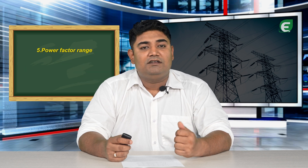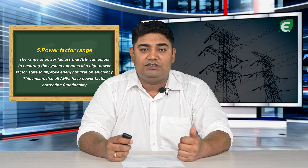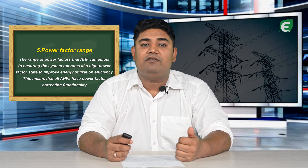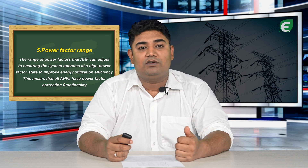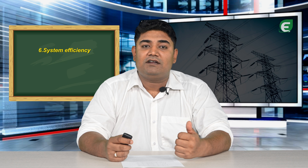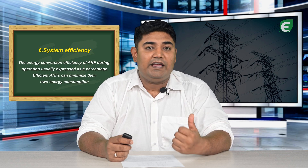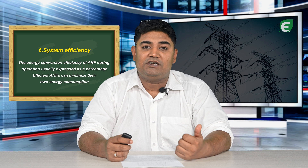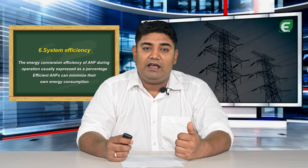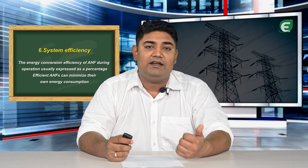The power factor range is the range of power factor that AHF can adjust to, ensuring the system operates at a high power factor state to improve energy utilization efficiency. This means that all AHFs have power factor correction functionality. System efficiency is the energy conversion efficiency of AHF during operation, usually expressed as a percentage. Efficient AHFs can minimize their own energy consumption.